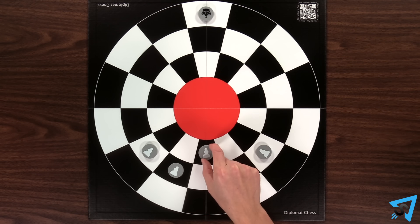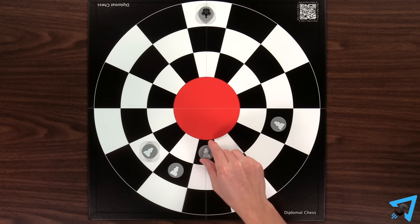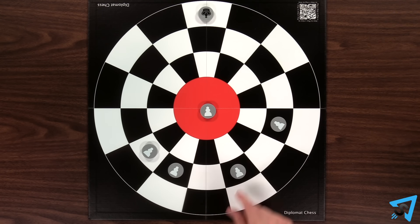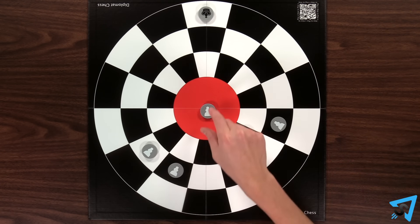Pawns still move one space forward, but a forward movement is any space that puts the pawn closer to the starting space of the opponent's king. Therefore, your pawns may move towards the center, laterally around the circle, or through the center.